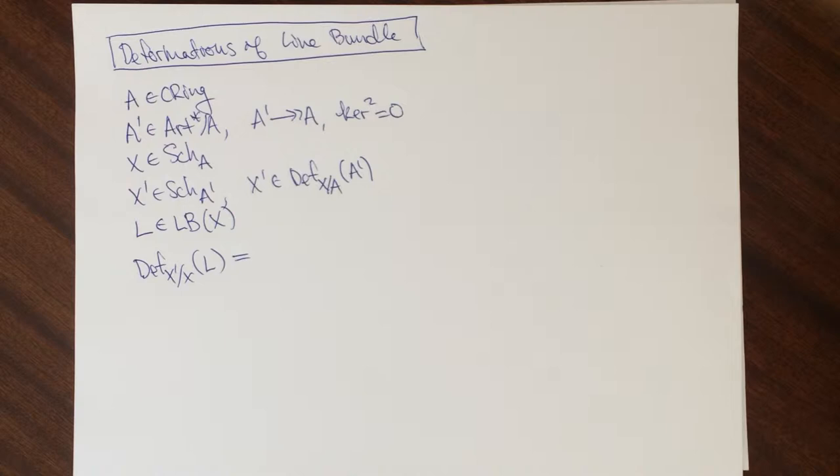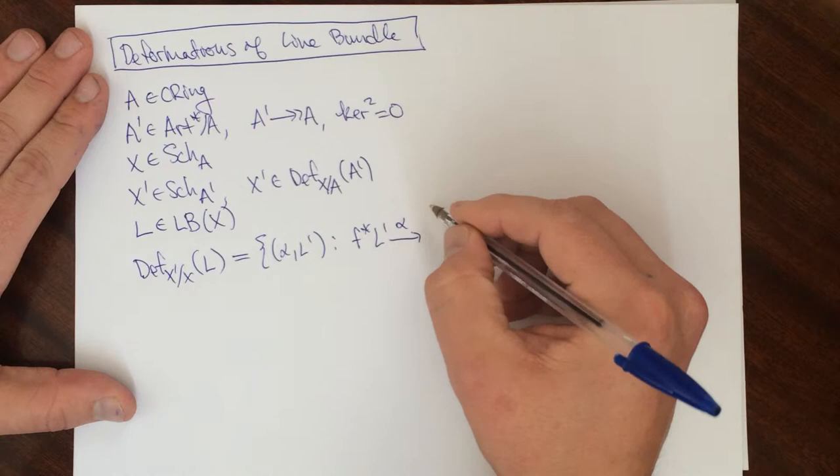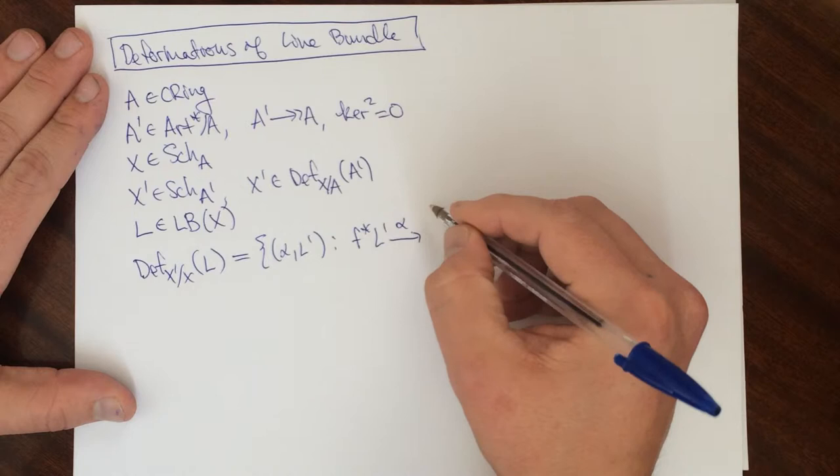So this is going to be pairs of alpha L prime, such that we have F star L prime, and we're going to fix an identification here of L, like so.